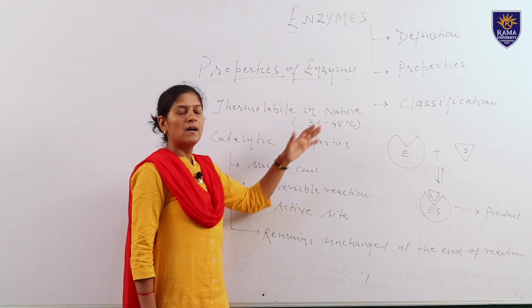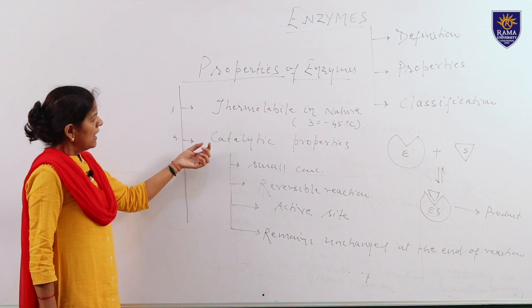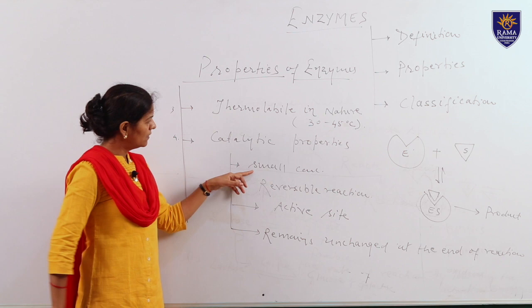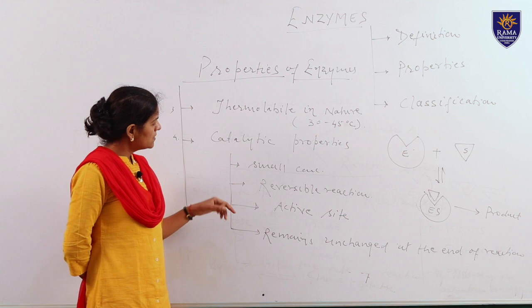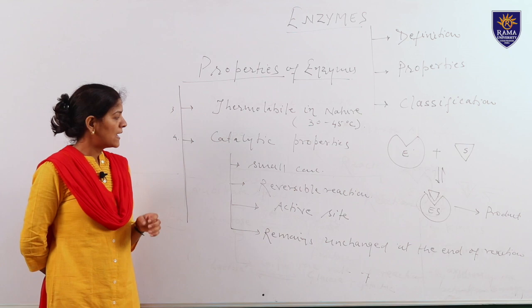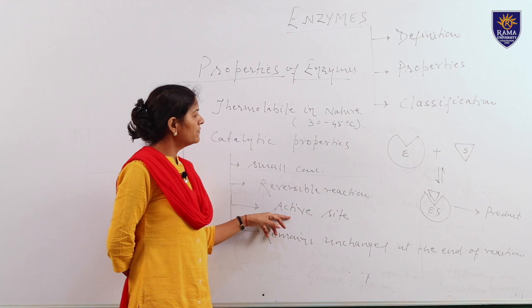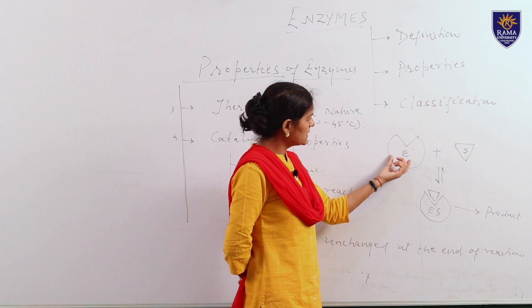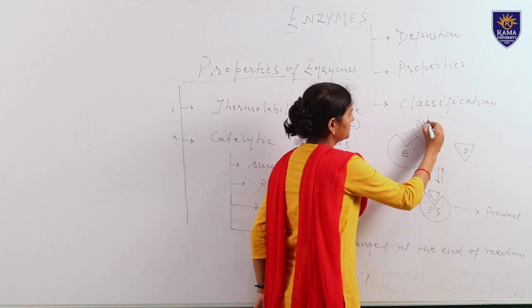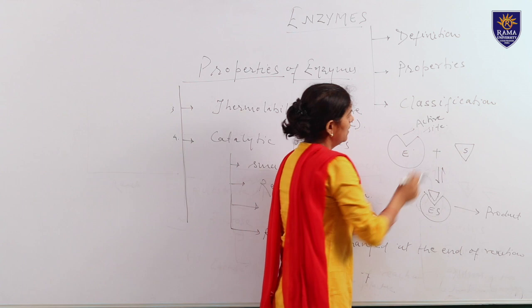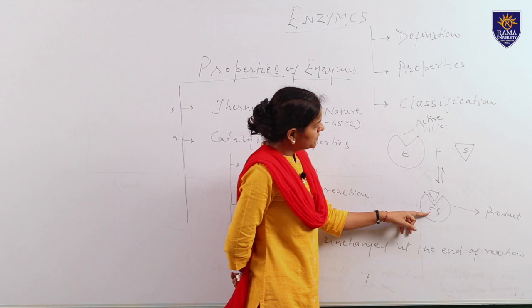The next property is the catalytic property. Catalytic properties of enzyme involve the following points. First, enzymes are required in very small concentration to perform a particular reaction. Second, all enzymes perform reversible reactions. Third, the enzyme contains a specific site called the active site to which a particular substrate reacts to give a particular product. In this figure, the entire enzyme never reacts with the substrate — only a particular part called the active site reacts with the substrate to give an enzyme-substrate complex, which is unstable in nature and further undergoes degradation to give a particular product.